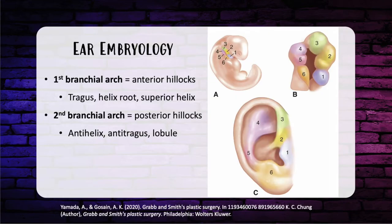The ears form from six hillocks that come from the first and second branchial arch. The first branchial arch gives off the anterior hillocks, numbers one, two, and three, that give rise to the tragus, root of the helix, and superior helix. The second branchial arch gives off the posterior hillocks, numbers four, five, and six, that give rise to the antitragus, the antihelix, and the lobule.